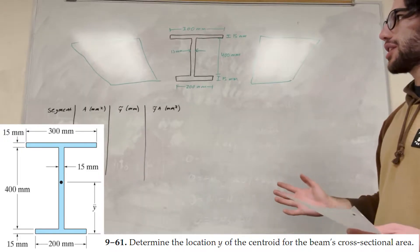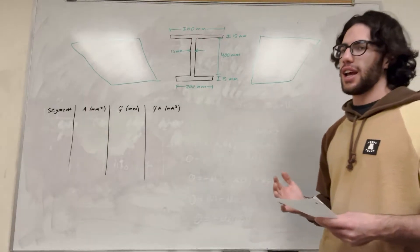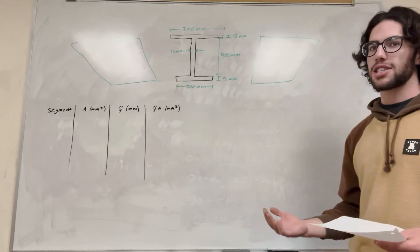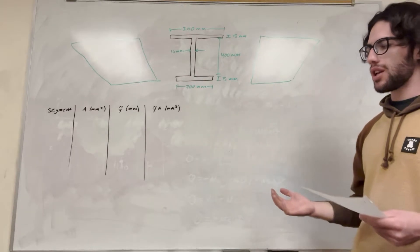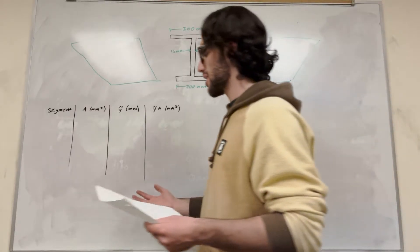So when you're finding the centroid, basically you want to go ahead and split it up into the simplest shapes possible. So here we have a pretty complex shape, there's a lot of things going on, and the best way to do this is just to split it up into three simple shapes.